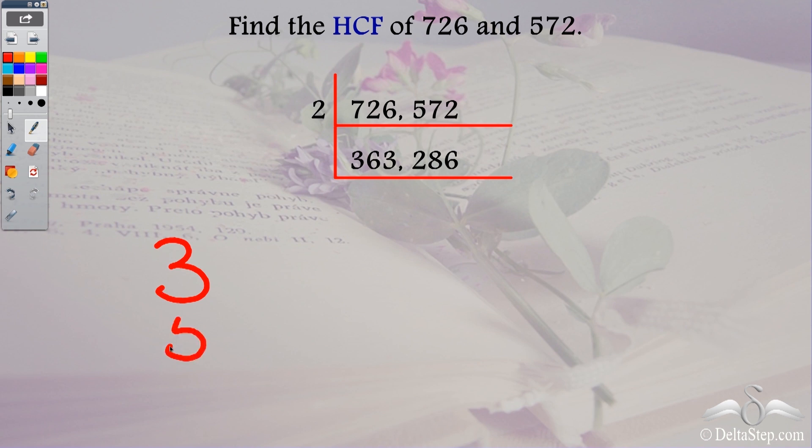So you move on to the next prime number which is 5. Now we have 3 at the end, so it is not divisible by 5. So I cannot divide both the numbers by 5. Then you move on to the next prime number which is 7 and when you check whether these two numbers are divisible by 7 or not you will find that they are actually not divisible by 7. So what is the next prime number after 7? 11.